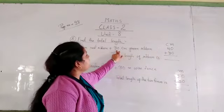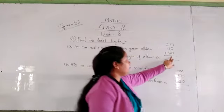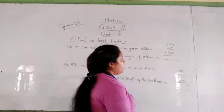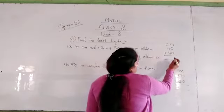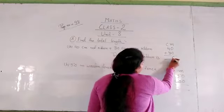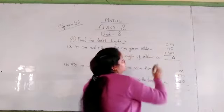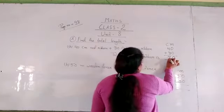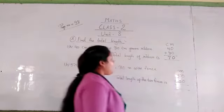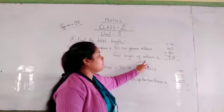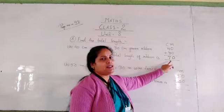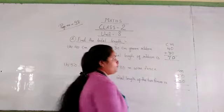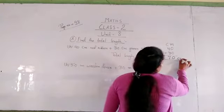And green ribbon's length is 30 cm. Now when we add: 0 plus 0 is equal to 0, and 4 plus 3 is equal to 7. The total length of the ribbon is 70 cm.